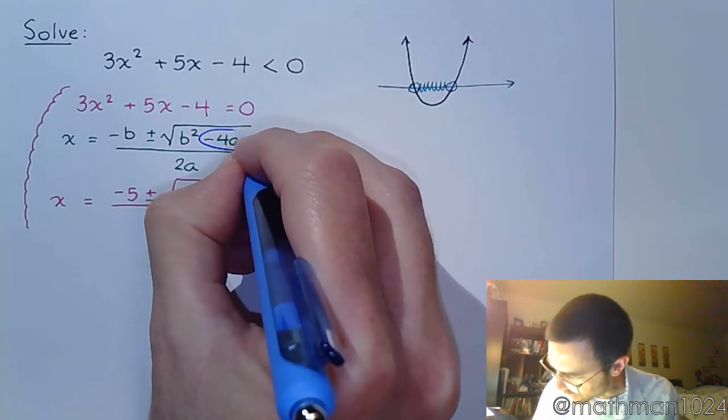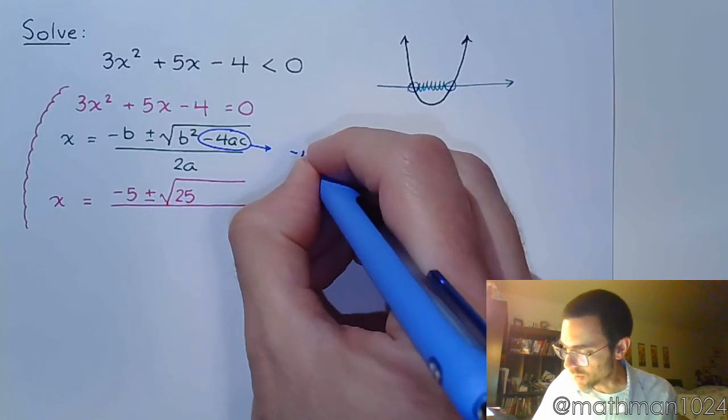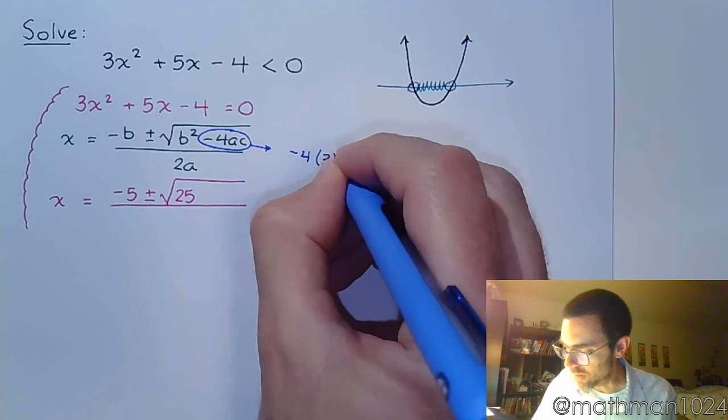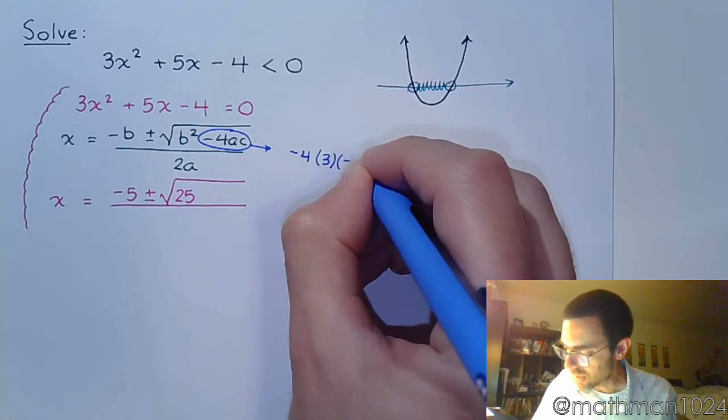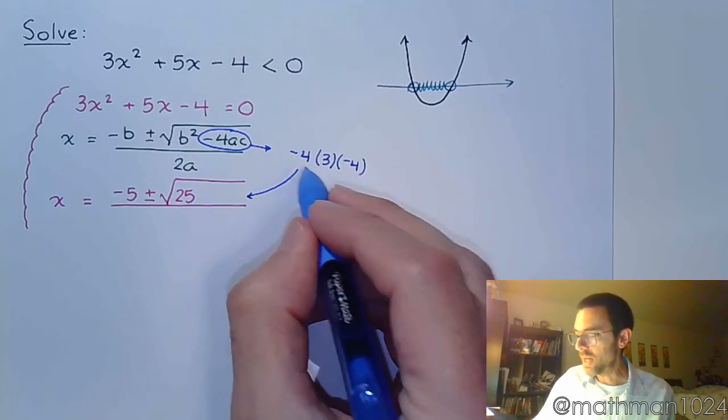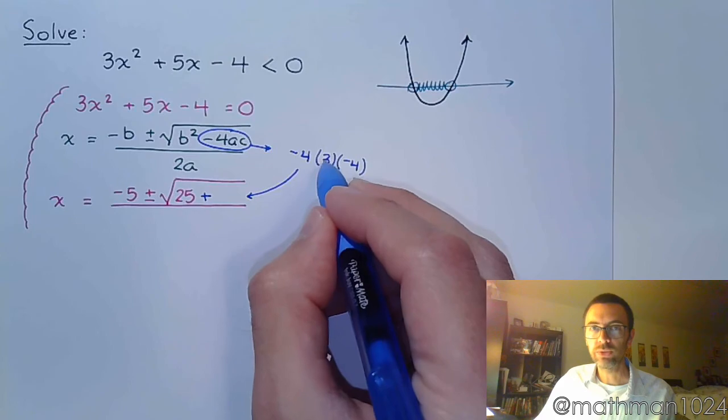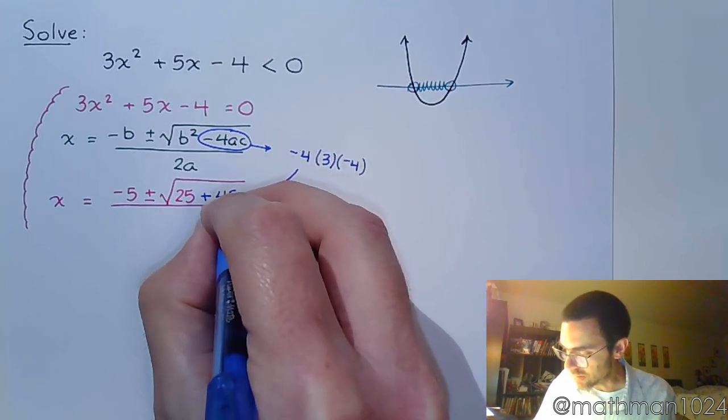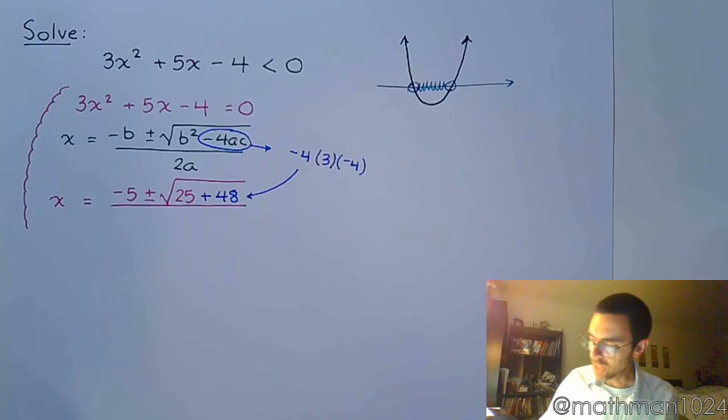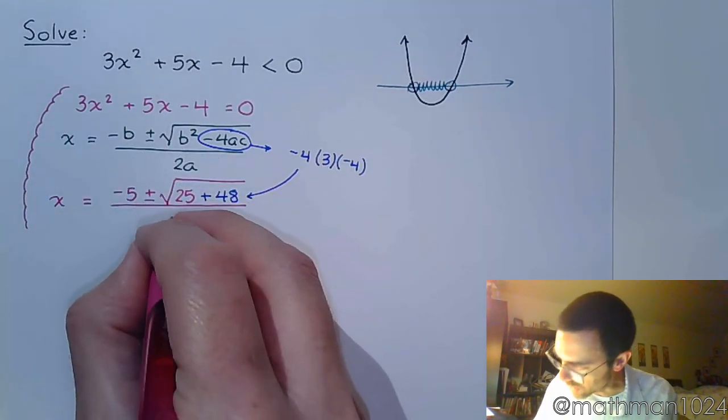So as you have seen me in the past, I write this guy up to the side, so negative 4 times A, 3, times C, negative 4. So negative times negative makes this guy positive, 4 times 3 is 12, 12 times 4 is 48. All divided by 2A, so A is 3, 2 times A is 6.